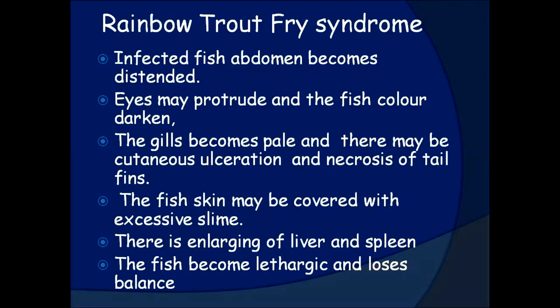Rainbow trout fry syndrome. Infected fish abdomen becomes distended. Eyes may protrude and the fish color darkens. The gills become pale and there may be cutaneous ulceration and necrosis of tail fins. The fish skin may be covered with excessive slime. There is enlargement of liver and spleen. The fish become lethargic and lose balance.